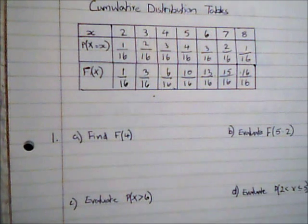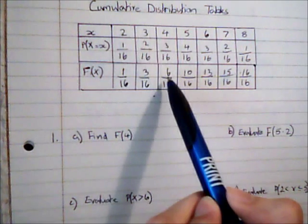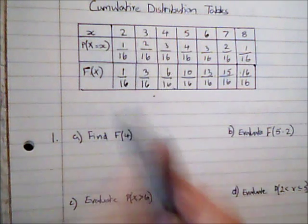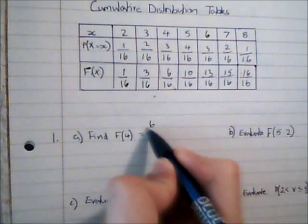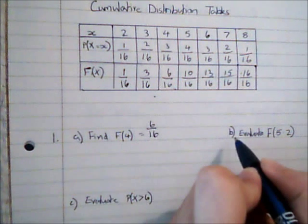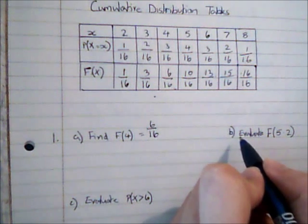So how can I then evaluate various things from this? Well to find the value of F(4), I can simply look up where x is 4 in my cumulative distribution column and I can see that that's 6/16ths. And again I could simplify that fraction if I wanted to.